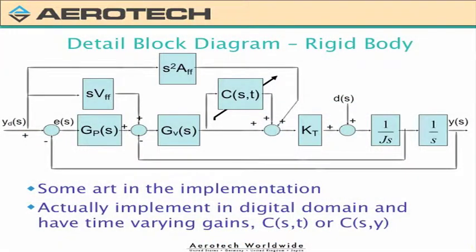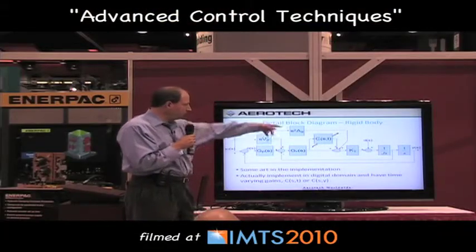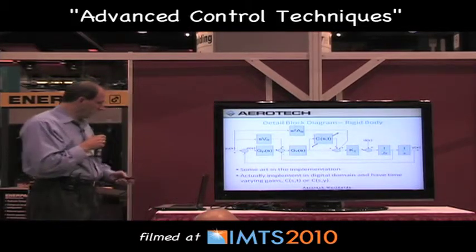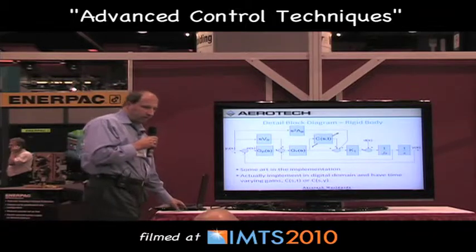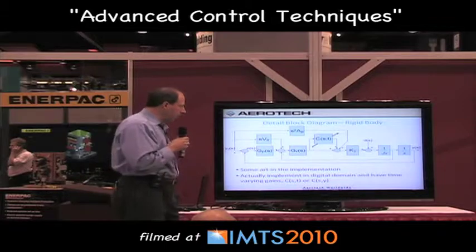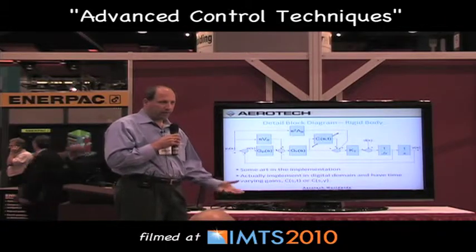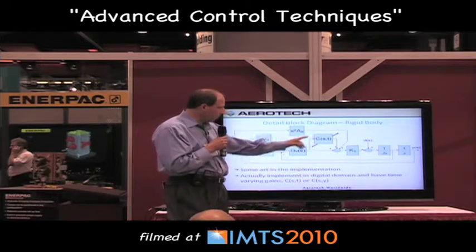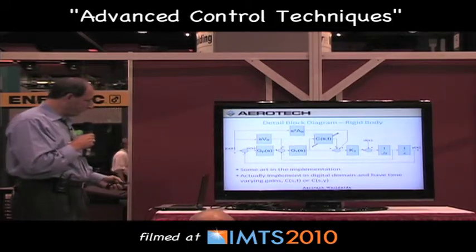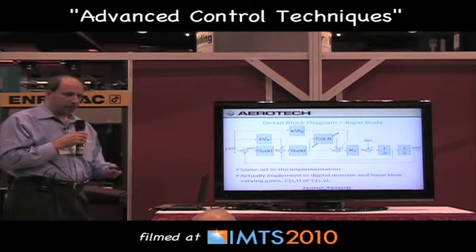Here's a more practical diagram with a free mass and a typical dual loop controller with feed forwards. I insert my harmonic cancellation filter before the current loop. There's a little bit of art in this because systems are non-linear — they have friction and other attributes that don't make a standard linear filter ideal. We've implemented this as a time-varying filter, or something that is spatially related to the system.